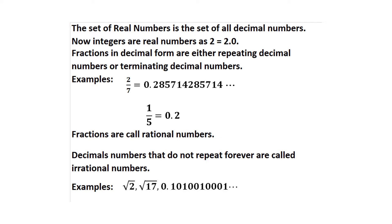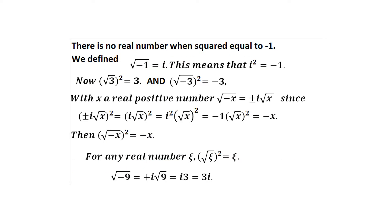Examples of irrational numbers include √2, √17, and the decimal 0.101001001001... which has a pattern but does not repeat. There is no real number whose square equals −1: a positive squared is positive, and a negative squared is also positive. We define the square root of −1 to be i, meaning i² = −1.